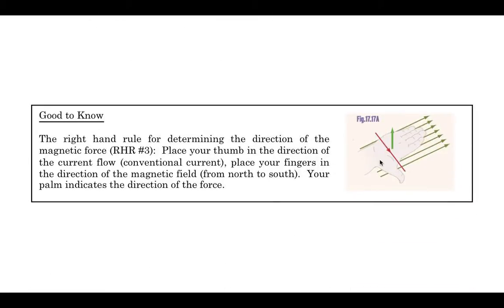And to discover the direction of this force, because after all, force is a vector, we have another right-hand rule. And so what we do is to determine the direction of the force, we place our thumb in the direction of the conventional current flow. You put your fingers in the direction of the magnetic field from north to the south. And your palm will indicate the direction of the force.